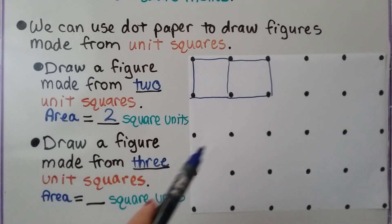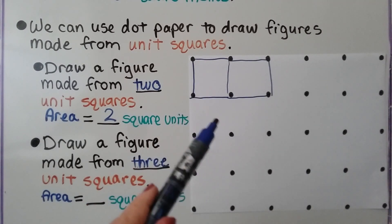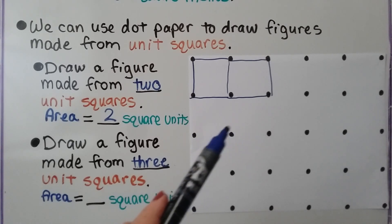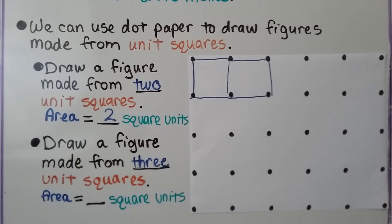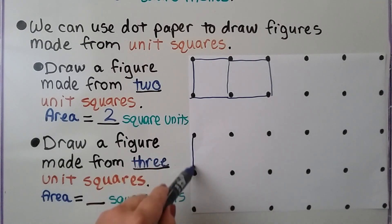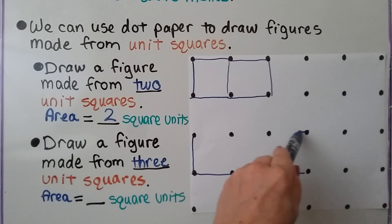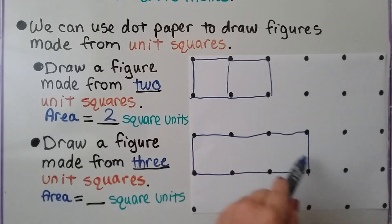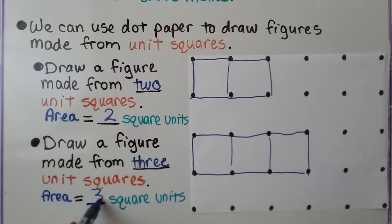We can make the figure in any shape we want as long as the squares are connected next to each other. You can't have one square here and one square over there — they've got to be connected. To draw a figure made from three unit squares, we draw a line straight across to make a bar. Can you see the three squares? One, two, three — the area is three square units.